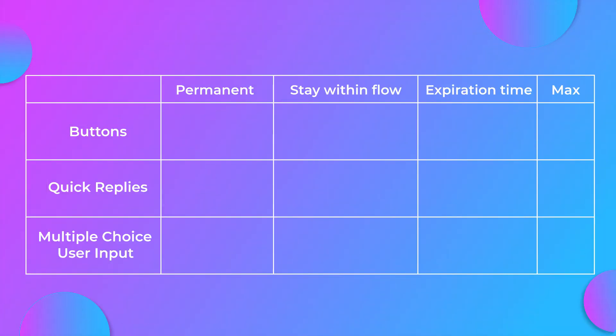Each of the buttons are different in four ways: whether they are permanent (so if you click on them, whether they still appear in the chat), if the user stays within a certain flow, if you can set up an expiration time for the button, and the maximum number of buttons you can use per message.